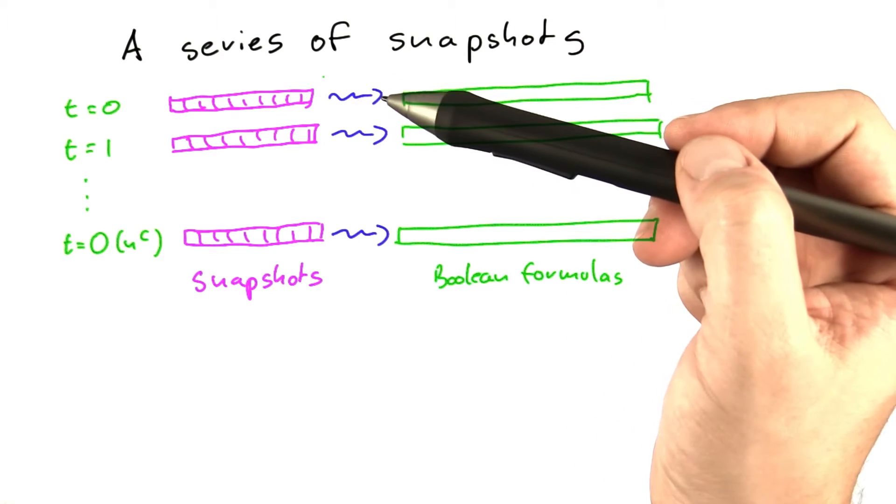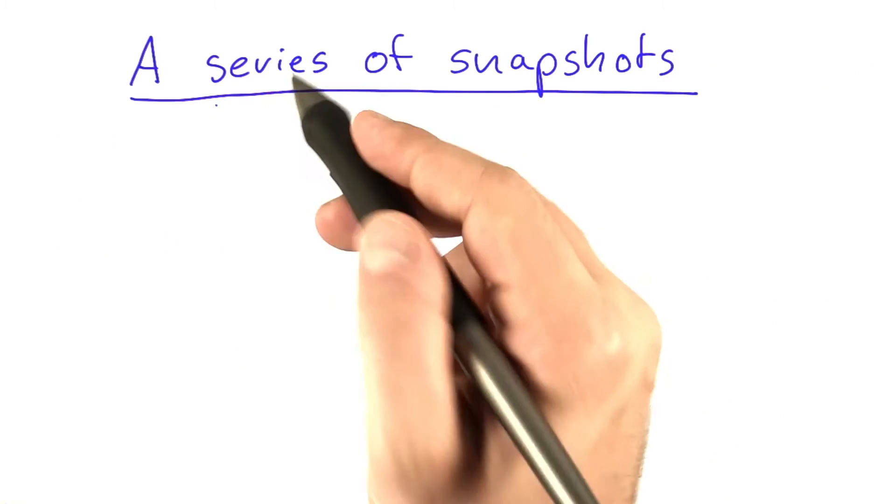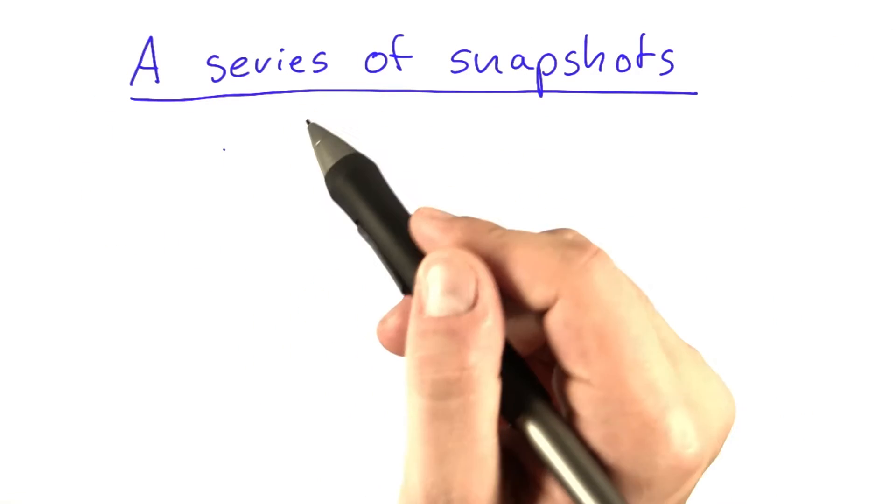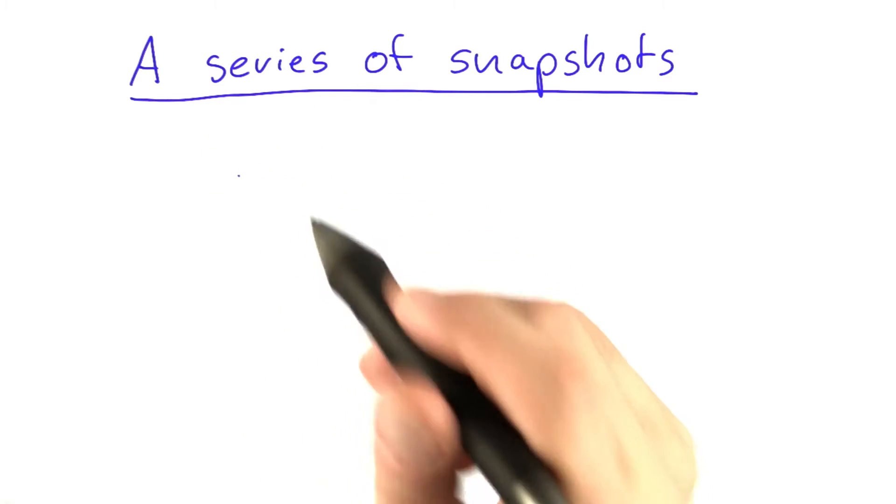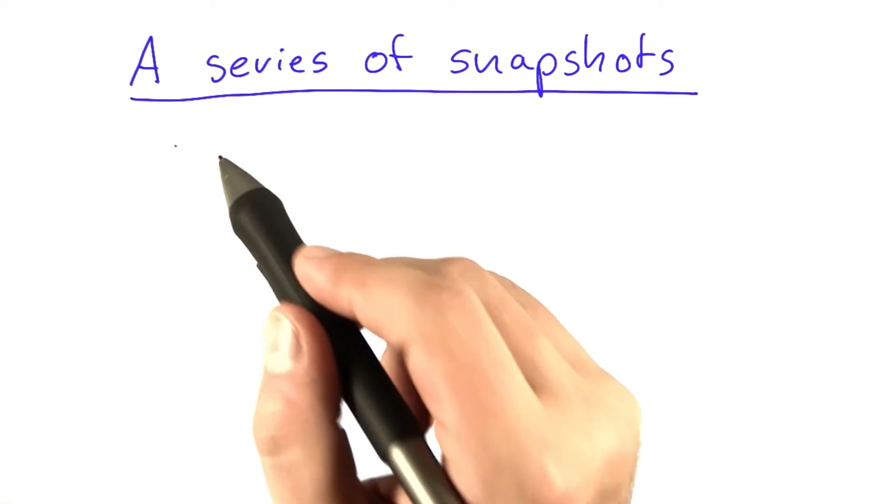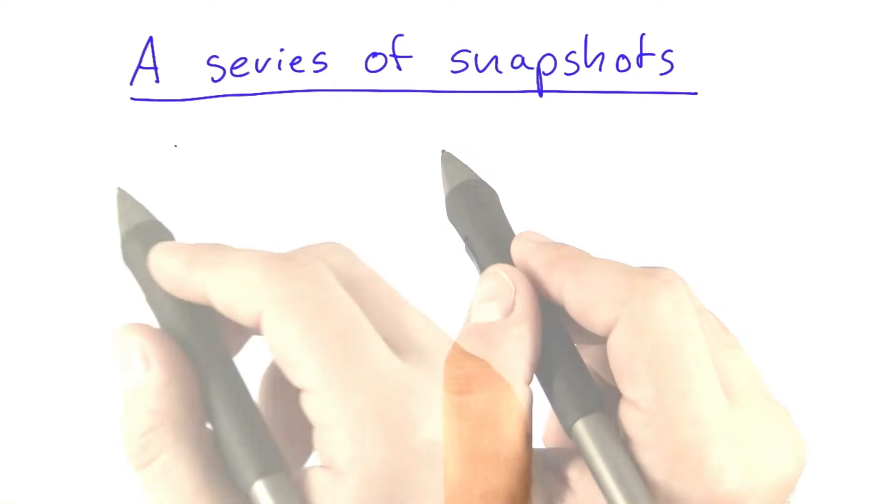And that snapshot can be represented as a Boolean formula. So now that we found out how we can encode a snapshot into a Boolean formula, let's go back to our main mission, showing that any problem that can be solved on a non-deterministic RAM can be encoded as a SAT formula.